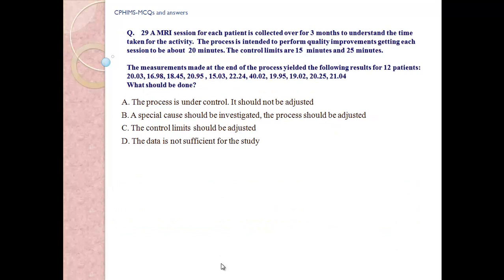Question number 29: MRI session times for each patient are collected over three months to understand the time taken for the process, intended to perform quality improvement, with each session targeted at about 20 minutes. Control limits are 15 minutes and 25 minutes. Measurements for 12 patients are: 2.03, 16.98, 18.45, 20.95, 15.03, 22.24, 40.02, 19.95, 19.02, 20.25, and 21.04.